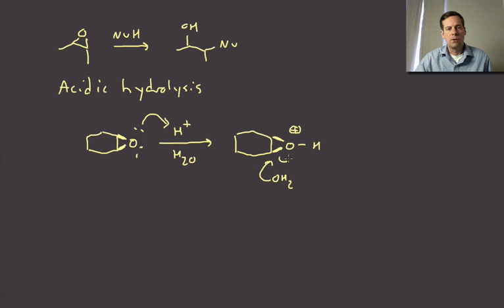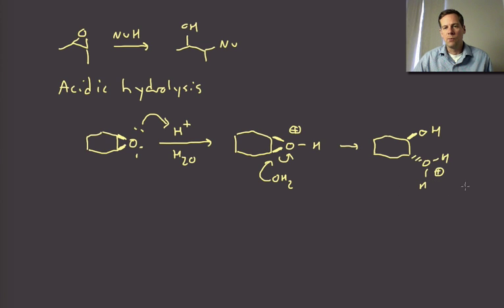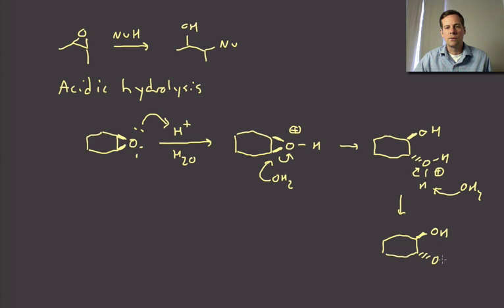We're going to cleave that strained carbon-oxygen bond. We'll get to an intermediate that looks like this - there's our OH, and then the water that just displaced is now going to be positively charged. Then we're going to simply need to deprotonate to get to a neutral compound. And there we go - there's our diol.